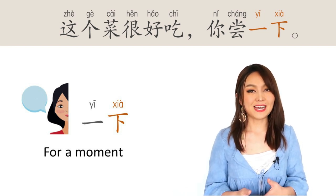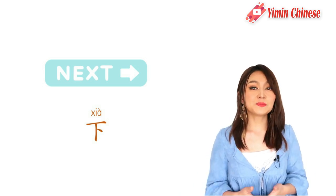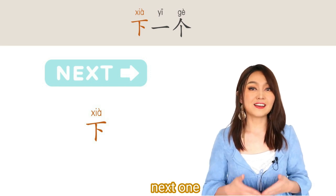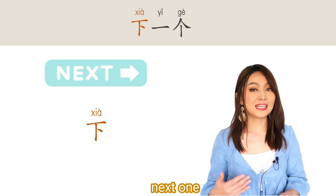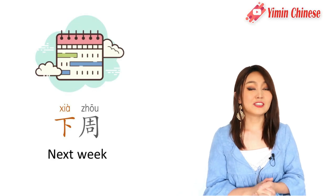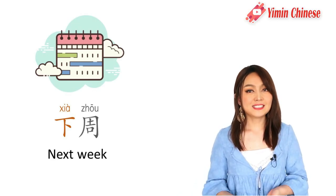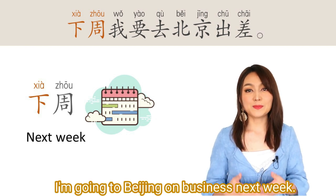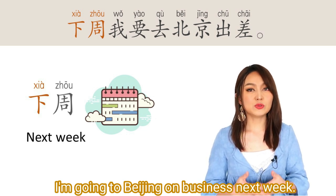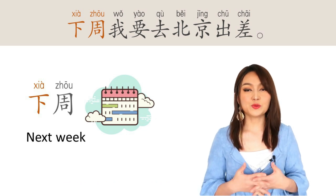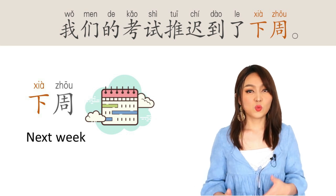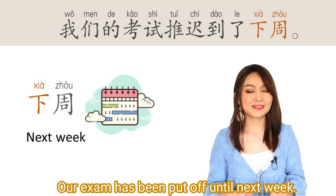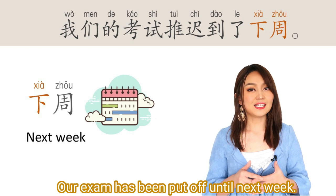The character 下 also developed the meaning of 'next.' To say 'next one' is 下一个 — you may have noticed I said this a lot in the video when introducing a new word. 下周 means 'next week.' For example: 下周我要去北京出差. I'm going to Beijing on business next week. Another example: 我们的考试推迟到了下周. Our exam has been put off till next week.